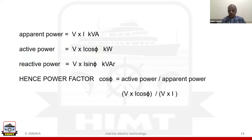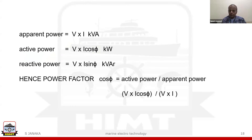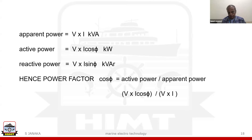The cos phi factor arises because we are resolving the current component into the voltage phase. This cos phi we term as power factor, which is nothing but active power divided by apparent power. Apparent power is V into I in kVA; active power is V into I cos phi in kilowatts; reactive power is V into I sin phi in kVAR. Power factor equals active power divided by apparent power — V I cos phi divided by V I — which is simply cos phi.